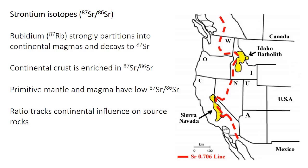Strontium isotopes — the ratio of strontium-87 to strontium-86 — can also be used to distinguish between continental and mantle or juvenile sources. The element rubidium strongly partitions into continental magmas, and rubidium-87 decays into strontium-87. Strontium-86 is found in all sorts of rocks, so continental rocks have an enriched strontium-87 to -86 ratio. In Western North America there's the somewhat famous 0.706 line, which traces the edge of the old craton, separating continental rocks with Sr87/Sr86 greater than 0.706 on the east side from younger or juvenile rocks with lower ratios on the west side.